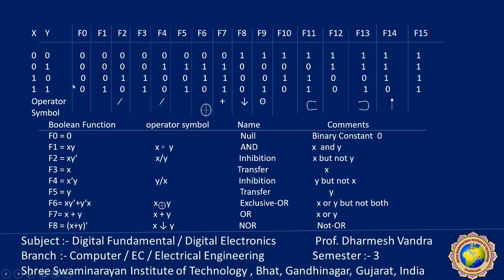F2: the output is 1 only when x is 1 and y is 0 — that is, x but not y. This is indicated by x·y̅. In all remaining input combinations the result is 0. This is also known as inhibition — x over y inhibition.